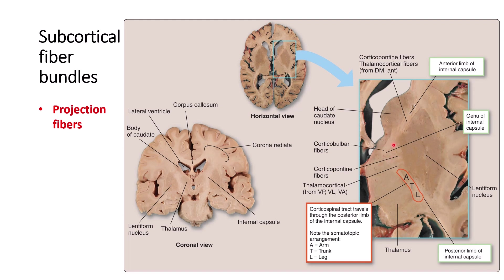In the genu area, there are corticobulbar fibers, which provide upper motor neurons for the cranial nerves. In the posterior limb, you can see thalamocortical fibers going from the thalamus to the cortex, coming from different areas — the ventral posterior (VP), ventral lateral (VL), and ventral anterior (VA) groups of thalamic nuclei — as well as additional corticobulbar fibers.